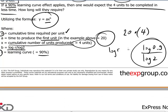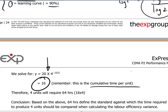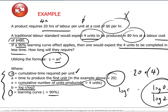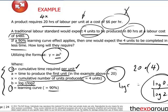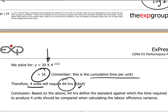Plugging in the numbers gives y equals 16. This means the cumulative average time per unit for the four units is 16 hours — so the first unit takes 20 hours, but the cumulative average across four units is 16 hours. Therefore, the total time required for four units is 4 times 16, or 64 hours. The learning curve effect means producing four units required 64 labor hours, not the expected 80 labor hours.